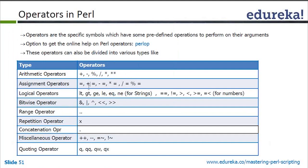In assignment operators we have equal to, plus equal to, minus equal to, star equal to (multiplication), division equal to, and modulo equal to. For example, 'a += 3' means you add 3 to the current value of a and assign it back — incrementing a by 2. This is the same concept as in C and C++.